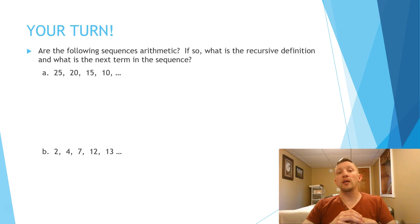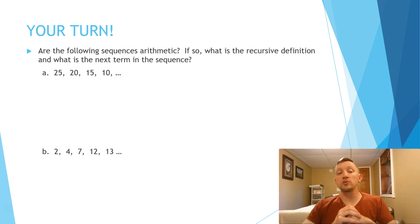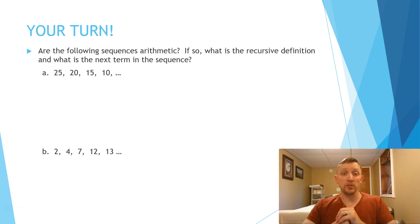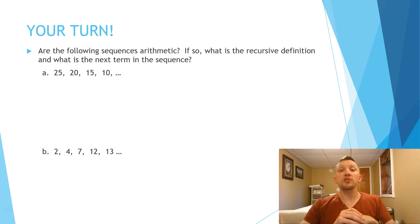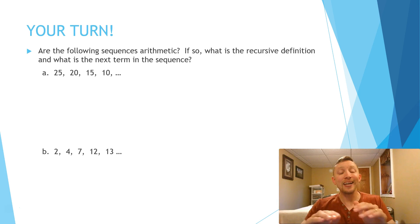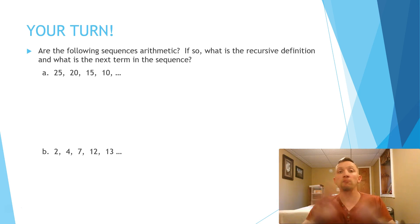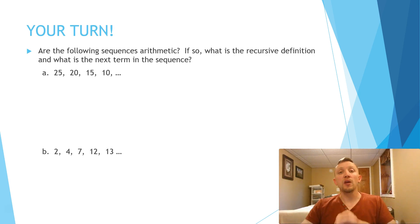So why don't you go ahead and do these on your own. I want you to look at these two sequences and first determine if they represent arithmetic sequences. If it is an arithmetic sequence, find the recursive formula. If it's not — meaning you're not adding the same amount each time — just say it's not an arithmetic sequence. Go ahead and pause the video and hit play when you're ready to check.